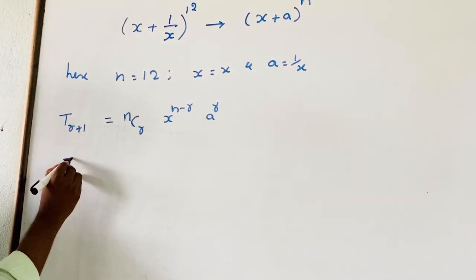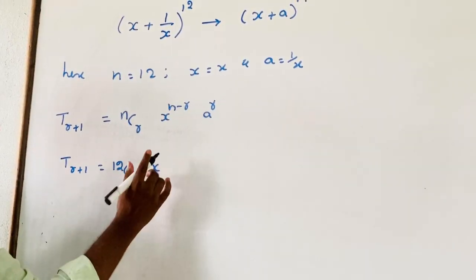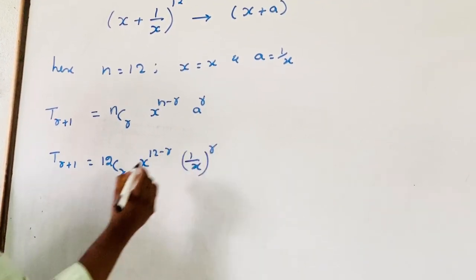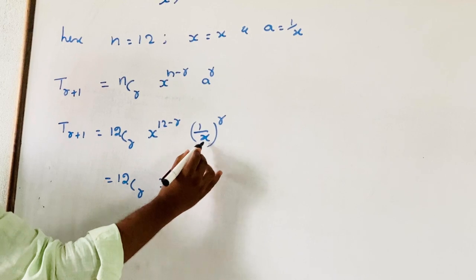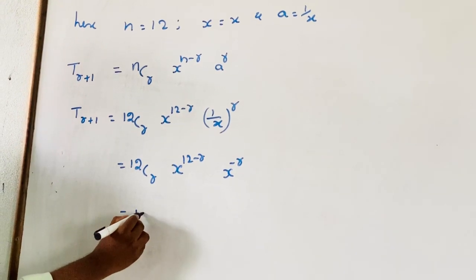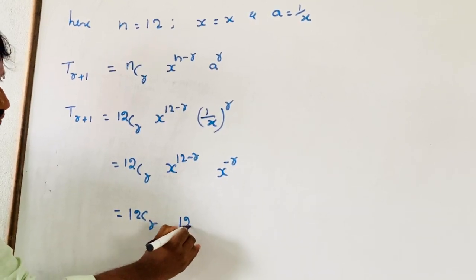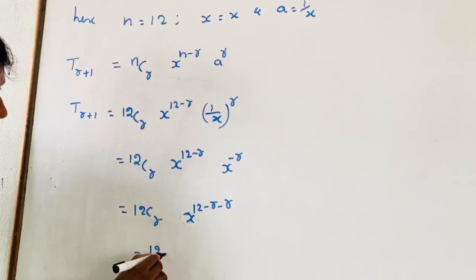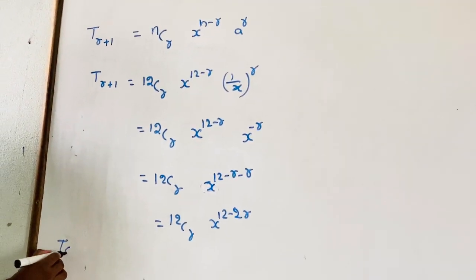Now substitute the values: T(r+1) = 12Cr · x^(12−r) · (1/x)^r = 12Cr · x^(12−r) · x^(−r). Since the bases are equal, we add the exponents: T(r+1) = 12Cr · x^(12−2r).